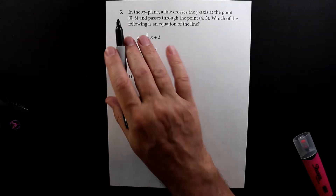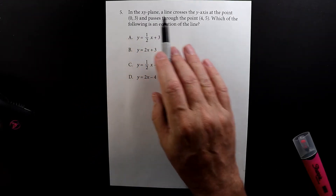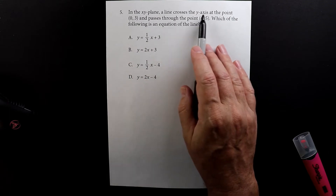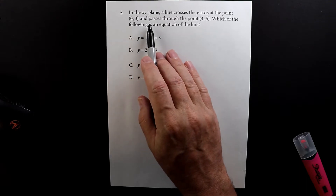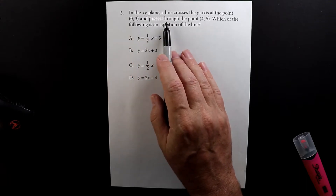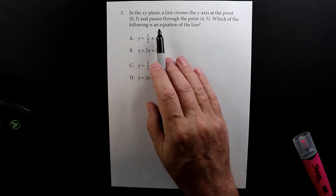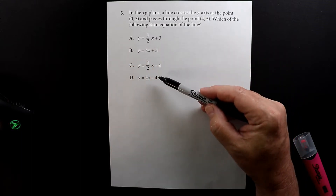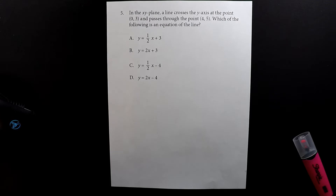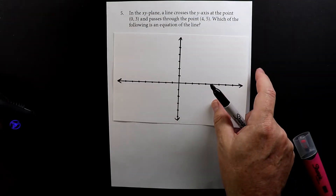This is number five. In the xy-plane, a line crosses through the y-axis at the point (0, 3) and passes through the point (4, 5). Which of the following is an equation of the line? It gives you a list of four different equations, so I've made this graph here and let's take this apart.